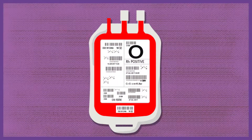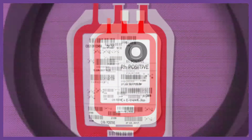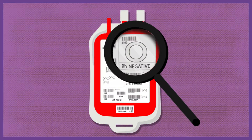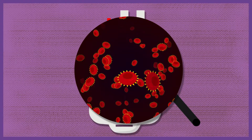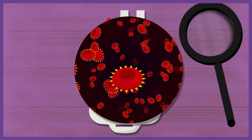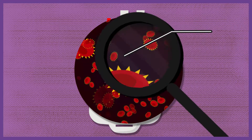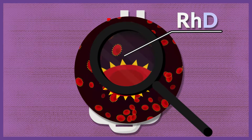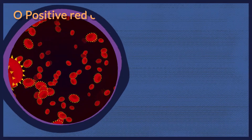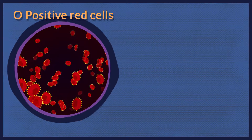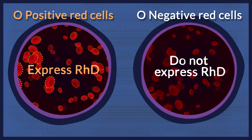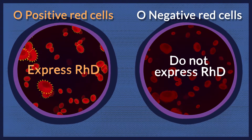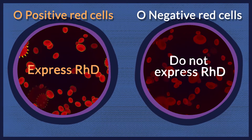Besides the ABO group, whether a unit of red blood cells is labeled as positive or negative denotes whether the red blood cells in that unit express an antigen known as RHD. For example, O positive red cells express the RHD antigen, whereas O negative red cells do not.